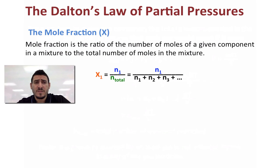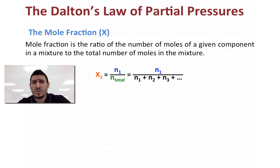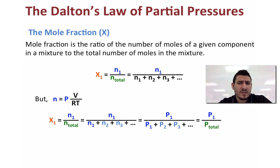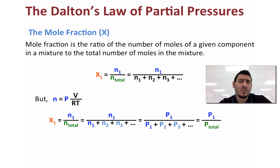Now let's discuss the mole fraction. The mole fraction is the ratio of the number of moles of a given component to the total number of moles in the mixture: χ1 = n1 / n_total, where n_total is the sum of all moles. Using the ideal gas law, n = PV/RT, we can replace moles with pressures. So the mole fraction can also be expressed as χ1 = P1 / P_total — whether we have moles or pressures, we can find the mole fraction.